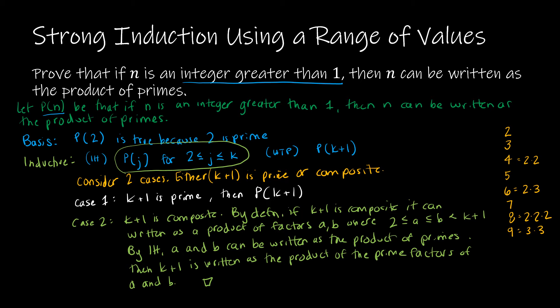Just in case you didn't follow that logic: let's say a is written as 2 times 3 times 7, and b is written as 3 times 11. Then k plus 1, which is made up of those two factors, would be written as 2 times 3 times 3 times 7 times 11 — just the product of the prime factorization of each value. So the question is, why did we have to use strong induction? Because we proved this by saying all of the values between 2 and k can be written as the product of primes. If we didn't have this inductive hypothesis for the entire range of values, this proof would not work.